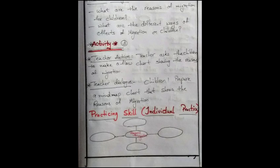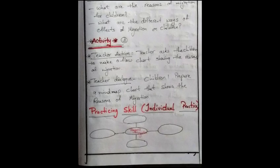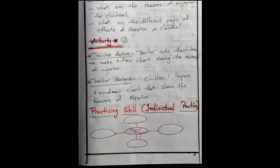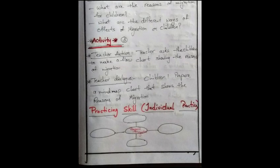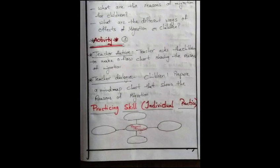Practicing skill. Individual practice: reasons for migration. Students will write the reasons of migration which are transfers, education purpose and work purpose. Whatever they understand they can write and they'll fill up the flowchart here.